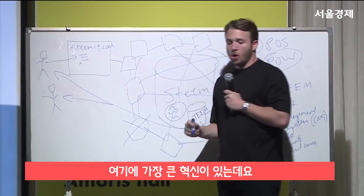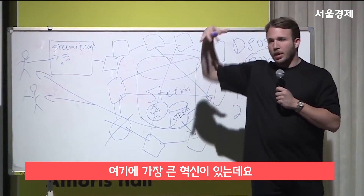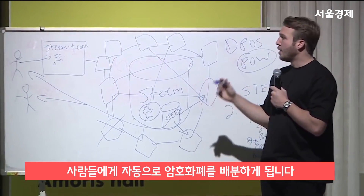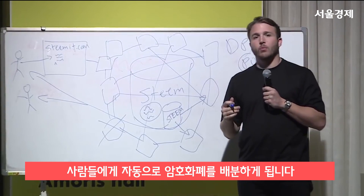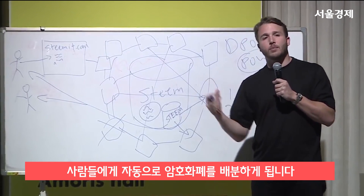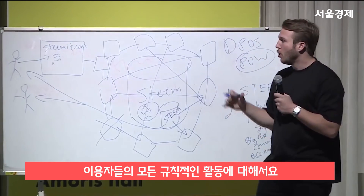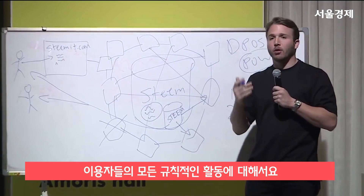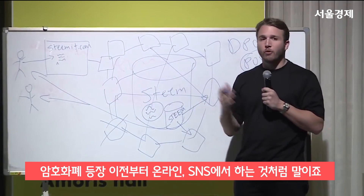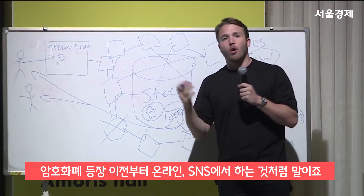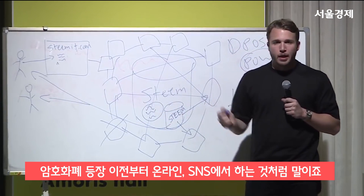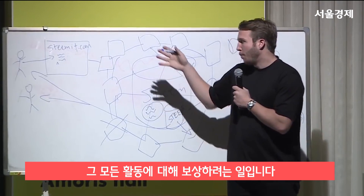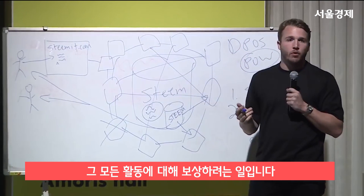So the major innovation — once you dig down to figure out how all this works — is that you have a cryptocurrency system where the cryptocurrency is autonomously distributed to real people doing very regular activities. Before cryptocurrency came along, we were all already online, participating in social media in some way.